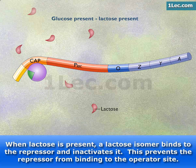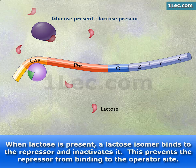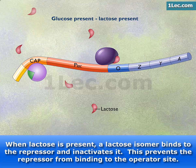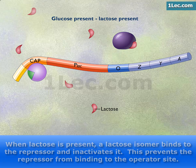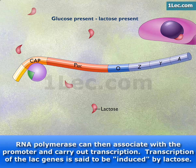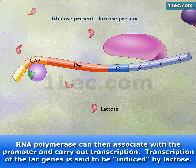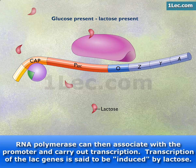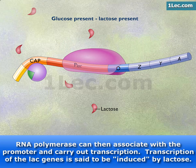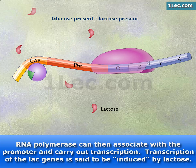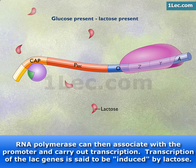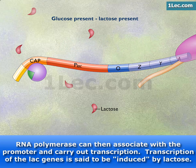When lactose is present, a lactose isomer binds to the repressor and inactivates it. This prevents the repressor from binding to the operator site. RNA polymerase can then associate with the promoter and carry out transcription. Transcription of the LAC genes is said to be induced by lactose.